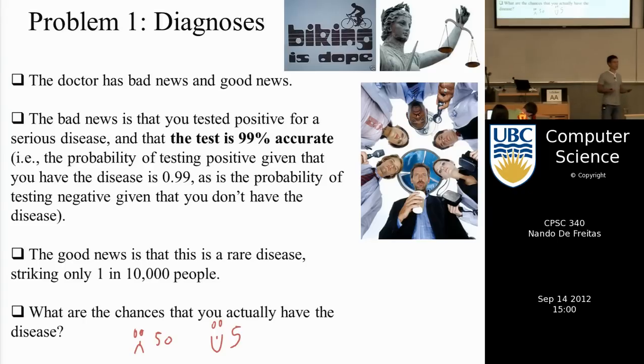We went through three problems. Problem one was you were told that a test that is 99% accurate reveals that you have a disease. Should you be worried even though the disease is very rare in the population? Most of you were worried, and today we will do the calculation, or hopefully many of you did this calculation at home for this class.